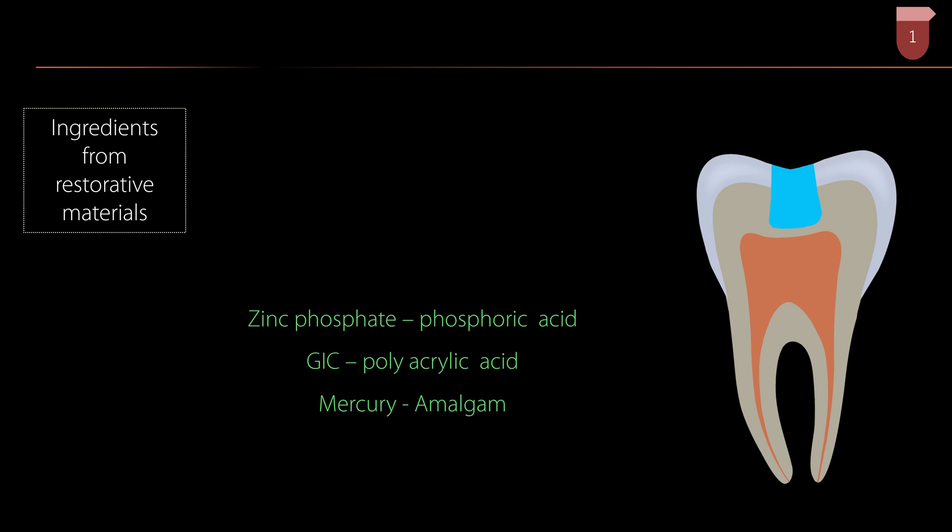The second way the pulp could get damaged is through ingredients from restorative materials. For example, zinc phosphate contains phosphoric acid, glass ionomer cement contains polyacrylic acid, and dental amalgam contains mercury. All these chemicals can cause damage to the dental pulp if they penetrate through the dentinal tubules. GIC may be a better material since the molecular size of polyacrylic acid is larger, but in very deep cavities without additional pulp protection, even glass ionomer cement can cause problems.